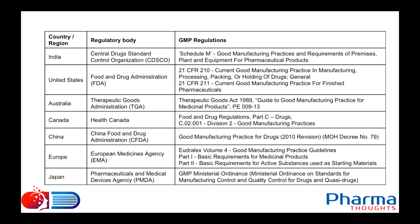In Australia, the regulatory body is the Therapeutic Goods Administration. The Therapeutic Goods Act 1989 contains GMP requirements. Each regulatory body is responsible for its own country's GMP regulations.